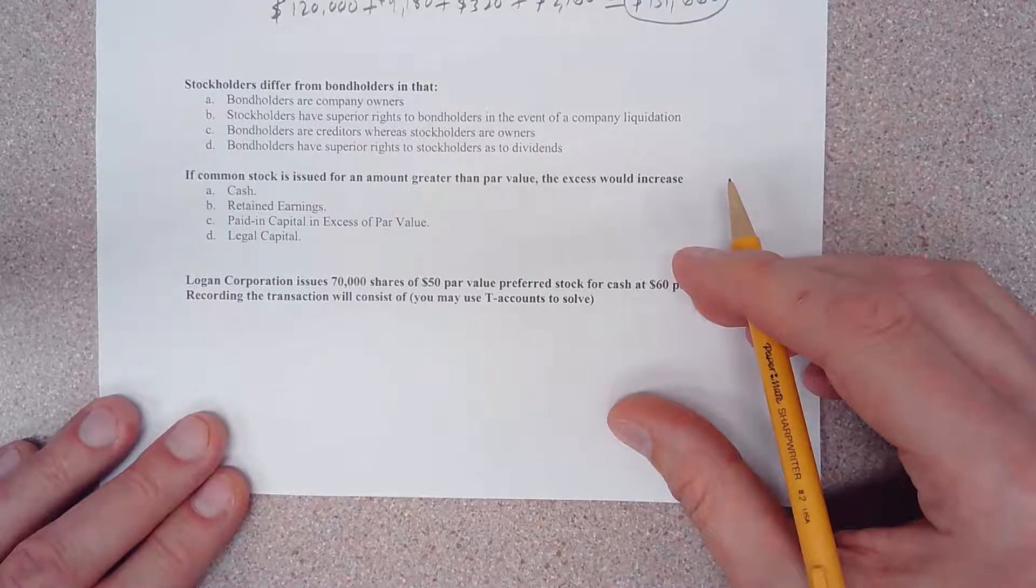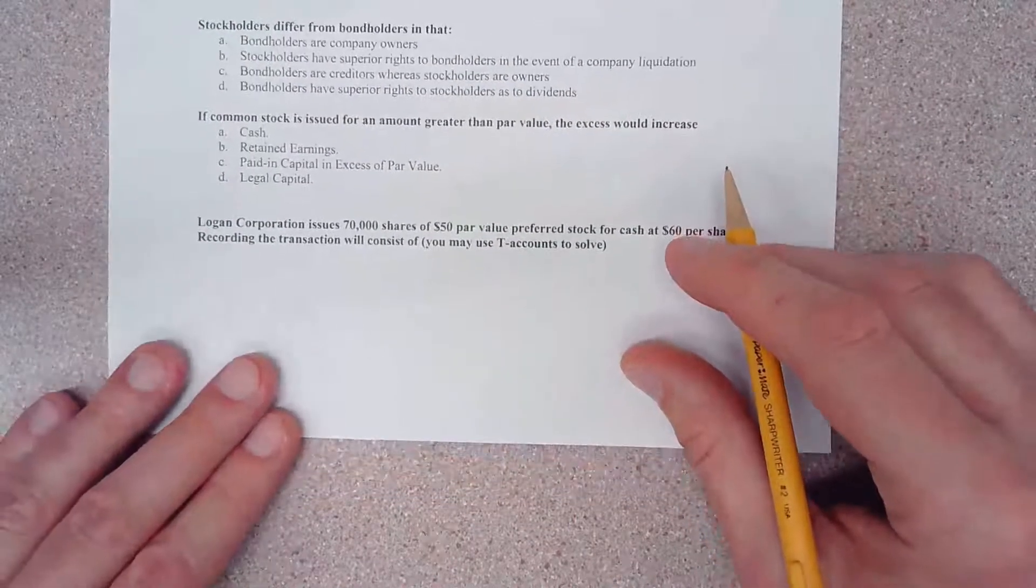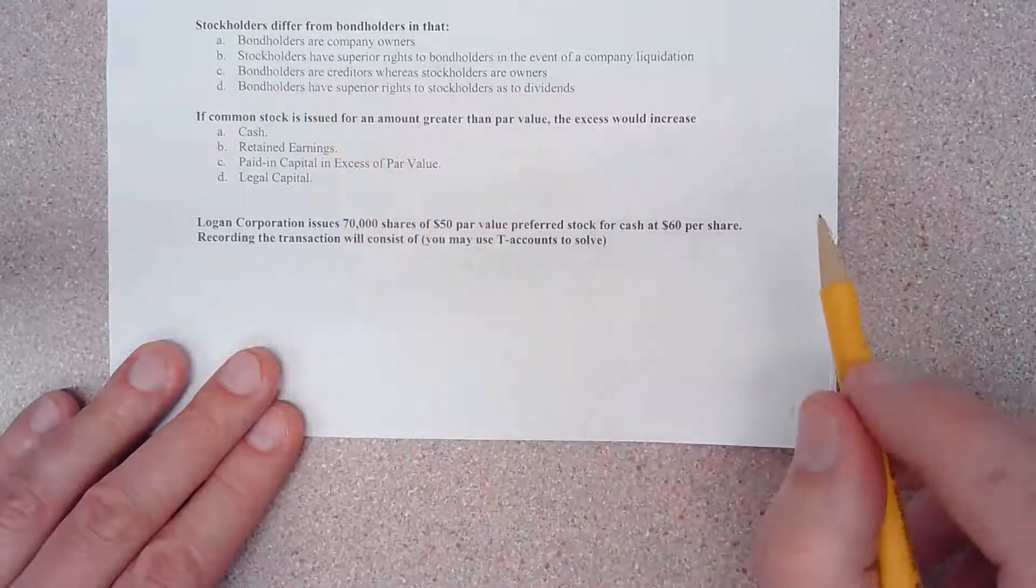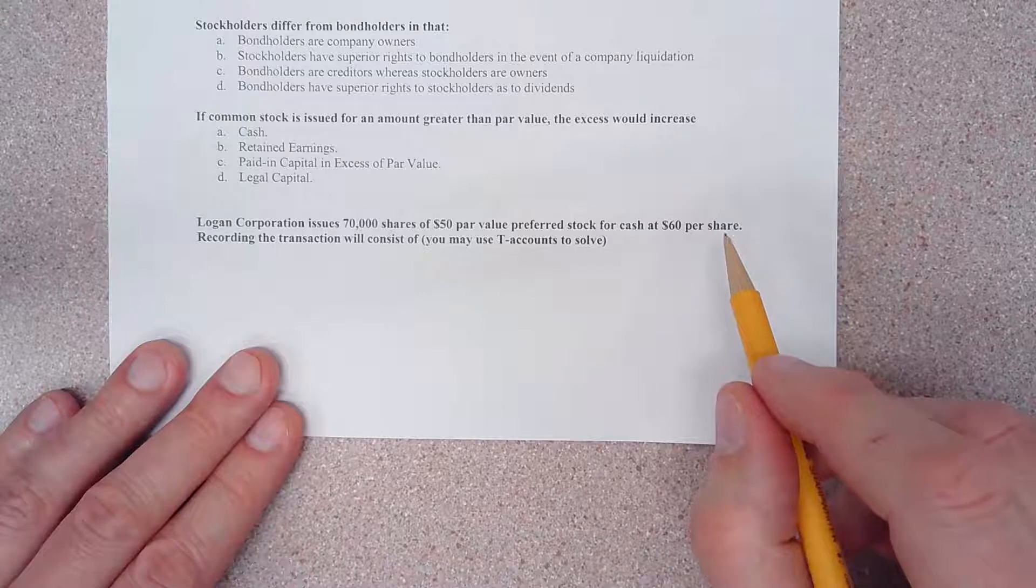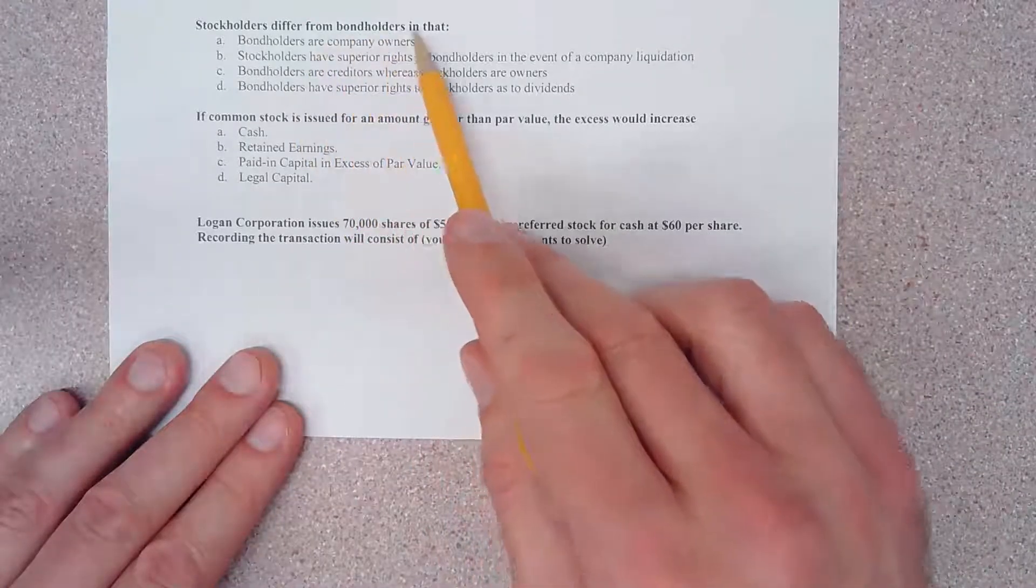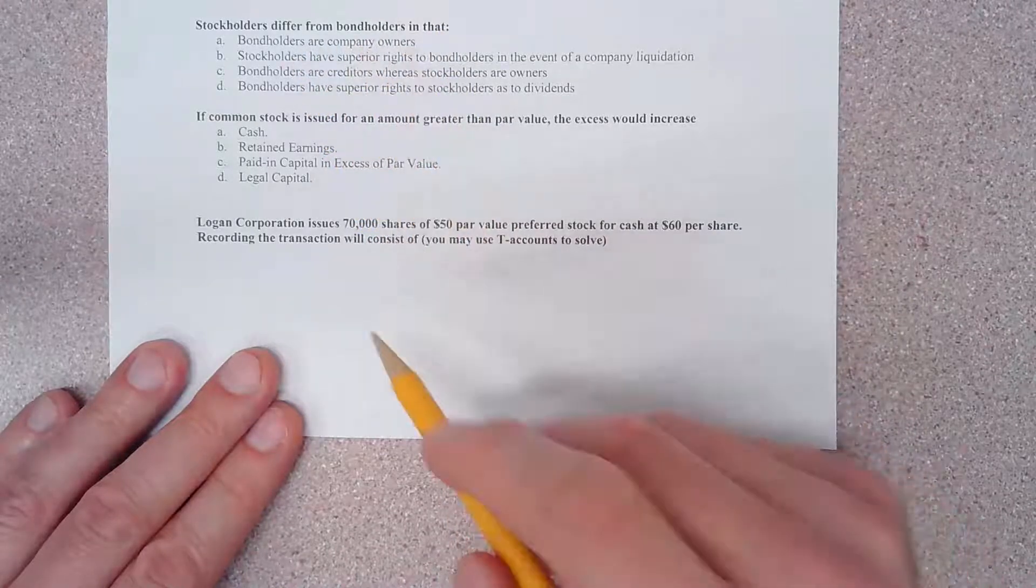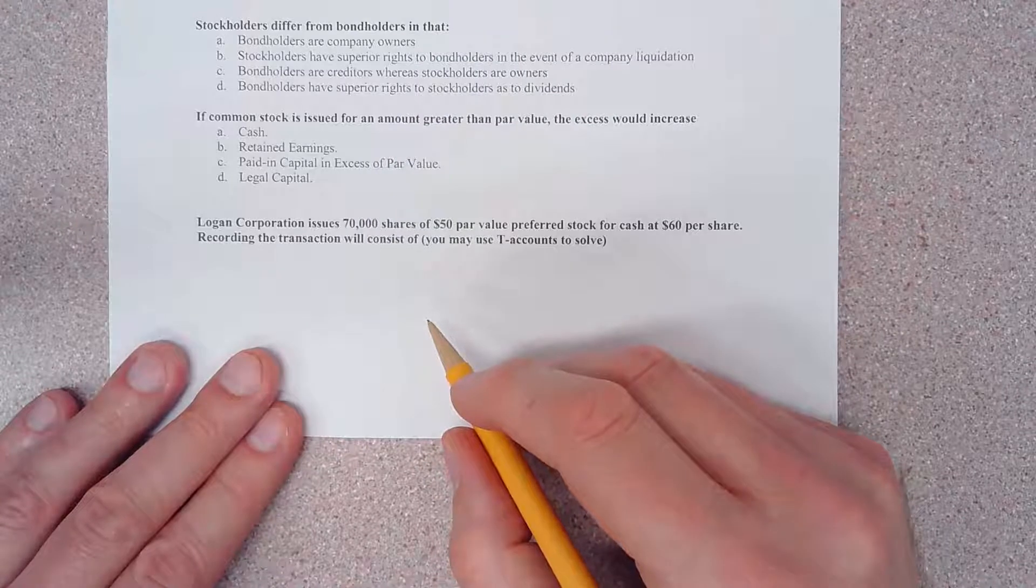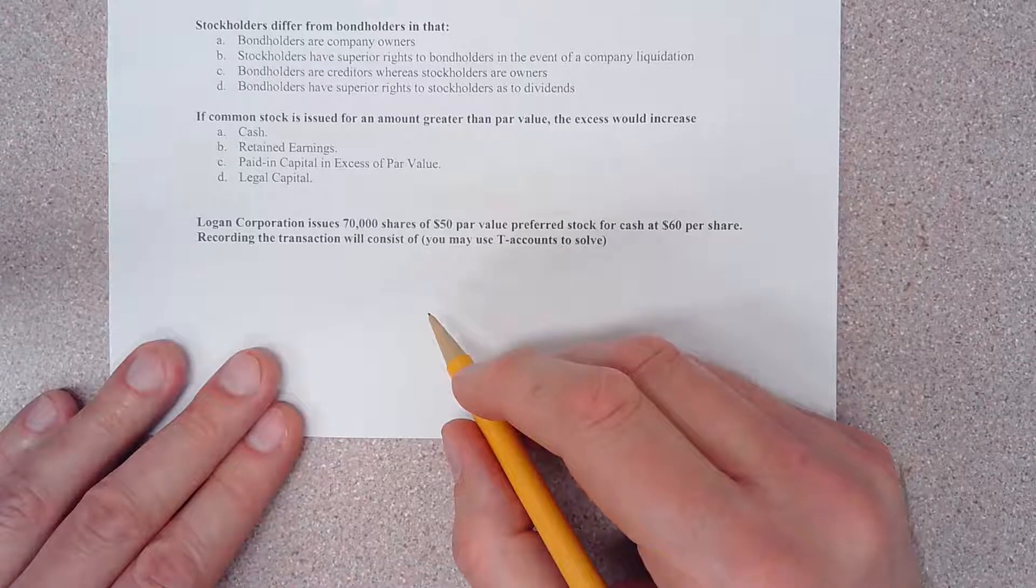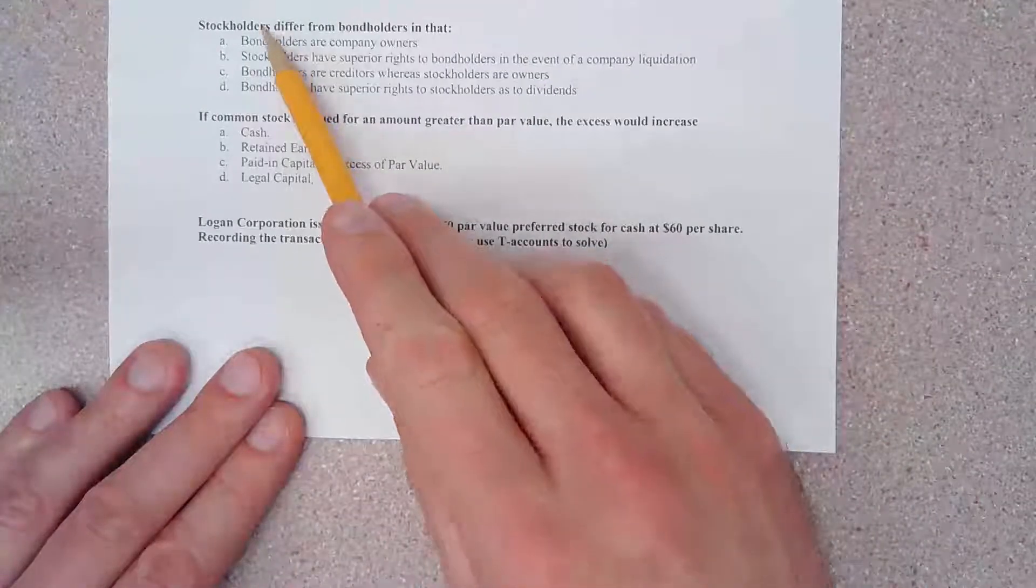The first question that we have here is asking us to distinguish between stockholders and bondholders. It says stockholders differ from bondholders in that bondholders are company owners. I think this is an absolutely incorrect statement.